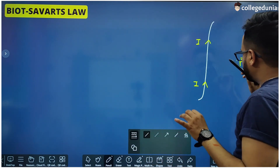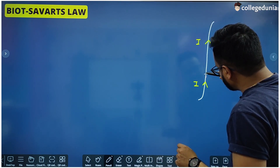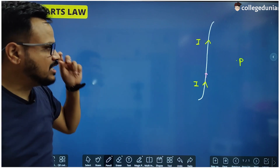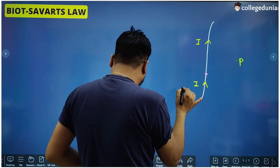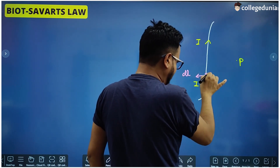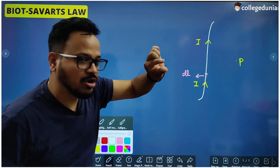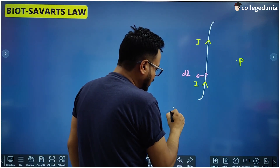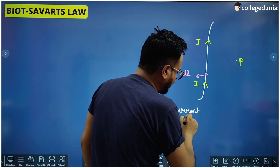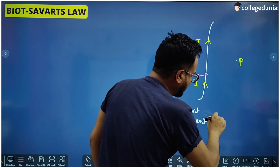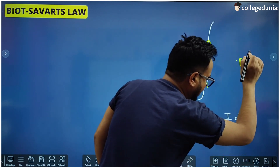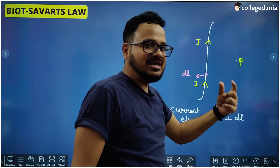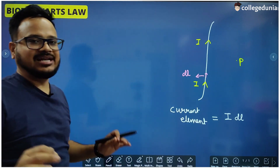Just listen carefully. Take a very small part of this conductor — this part shown in pink color — and suppose the length of this part is DL. If we multiply DL by I we get something which is called the current element, which is I into DL. It is a vector whose direction is the direction of the current. So I into DL is a vector whose direction is along the current, and it is called the current element.